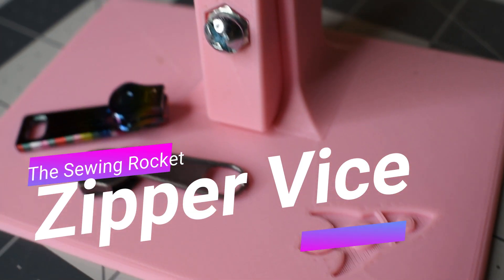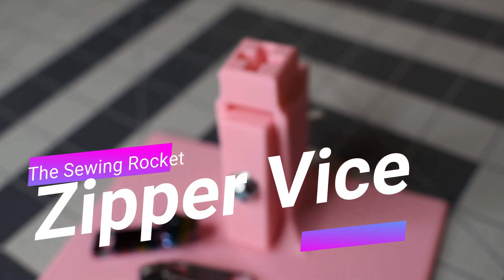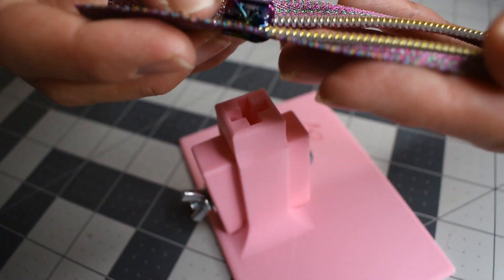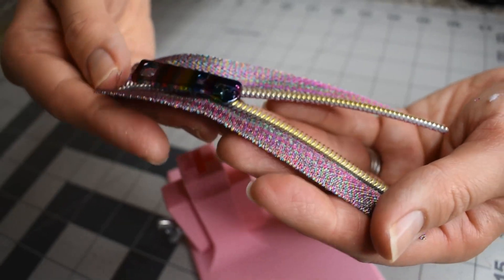Hello and welcome back to the Sewing Rocket. In this video I'm going to talk all about the zipper vise. For starters, the zipper vise is used to hold your zipper pull so that you can put your zipper on.